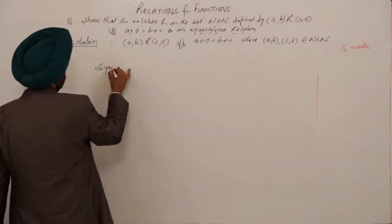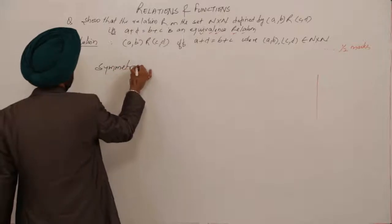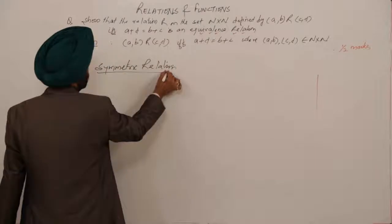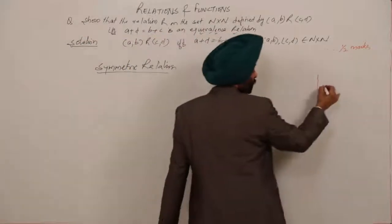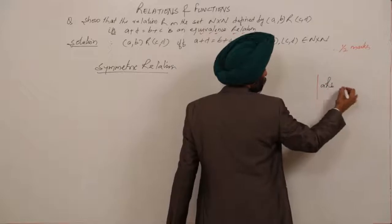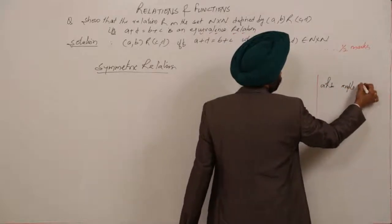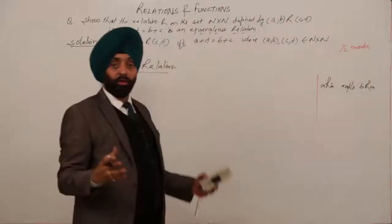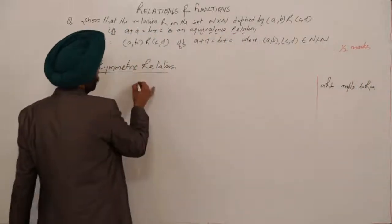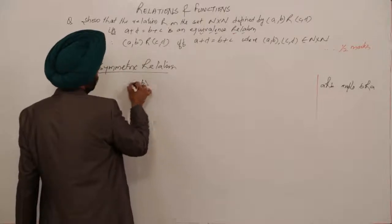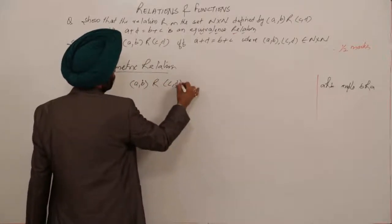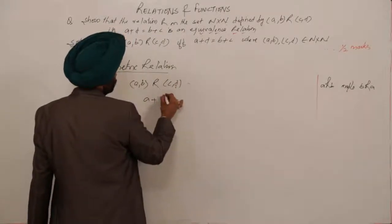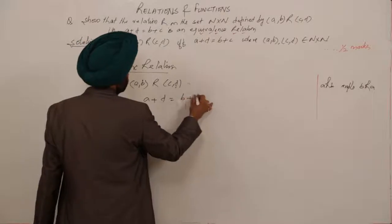For the symmetric relation, the condition is: a R b implies b R a. So if (a,b) is in relation with (c,d), the condition is a+d = b+c. From this condition we have to prove the other direction.